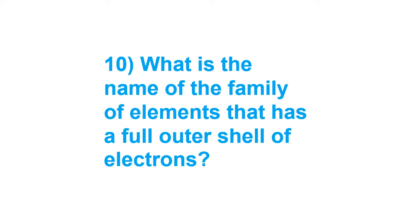This fully filled stable configuration is not found with any other family. Other atoms want to achieve this stability because it is the most stable condition for an atom. To achieve it, they either share, donate, or accept electrons — doing electronic transactions — and in doing so they attain stability and form compounds. The driving force for compound formation is the attainment of stability. Elements go for electron loss, gain, or sharing to reach the least energy state, where repulsions among electrons are minimum and stability is maximum.